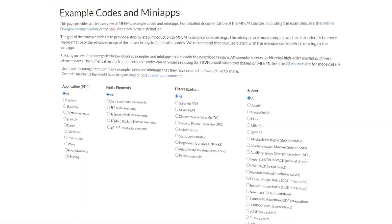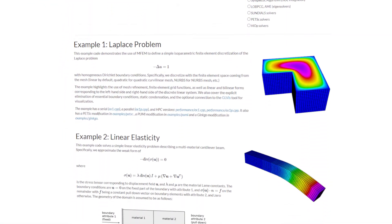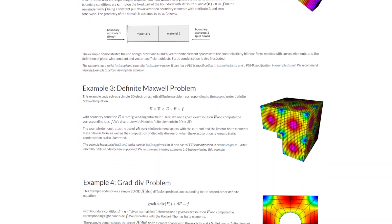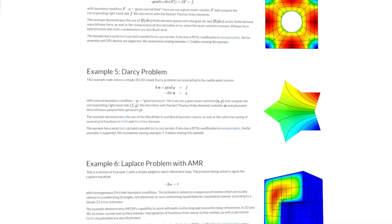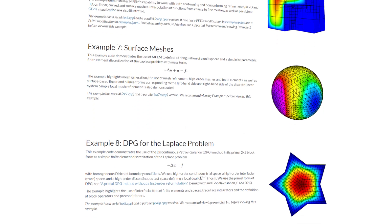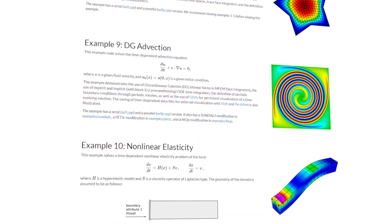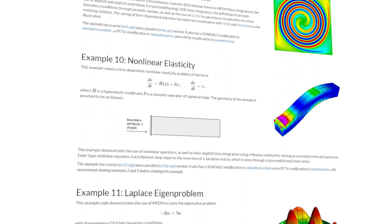MFEM is freely available on GitHub and its website, which also includes documentation, tutorials, and an extensive set of examples and mini-apps. They help users evaluate new features, improve the performance of their code, and solve practical problems that arise in their scientific research.